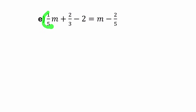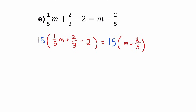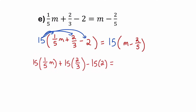In part E, for the first time we have three fractions. Let's start by getting rid of those fractions by multiplying both sides of the equation by the lowest common multiple of 5 and 3. The lowest common multiple of 5 and 3 is 15. So I'll multiply both sides by 15, distributing that 15 to all three terms on the left and both terms on the right. 15 divided by 5 is 3, and 15 divided by 3 is 5.